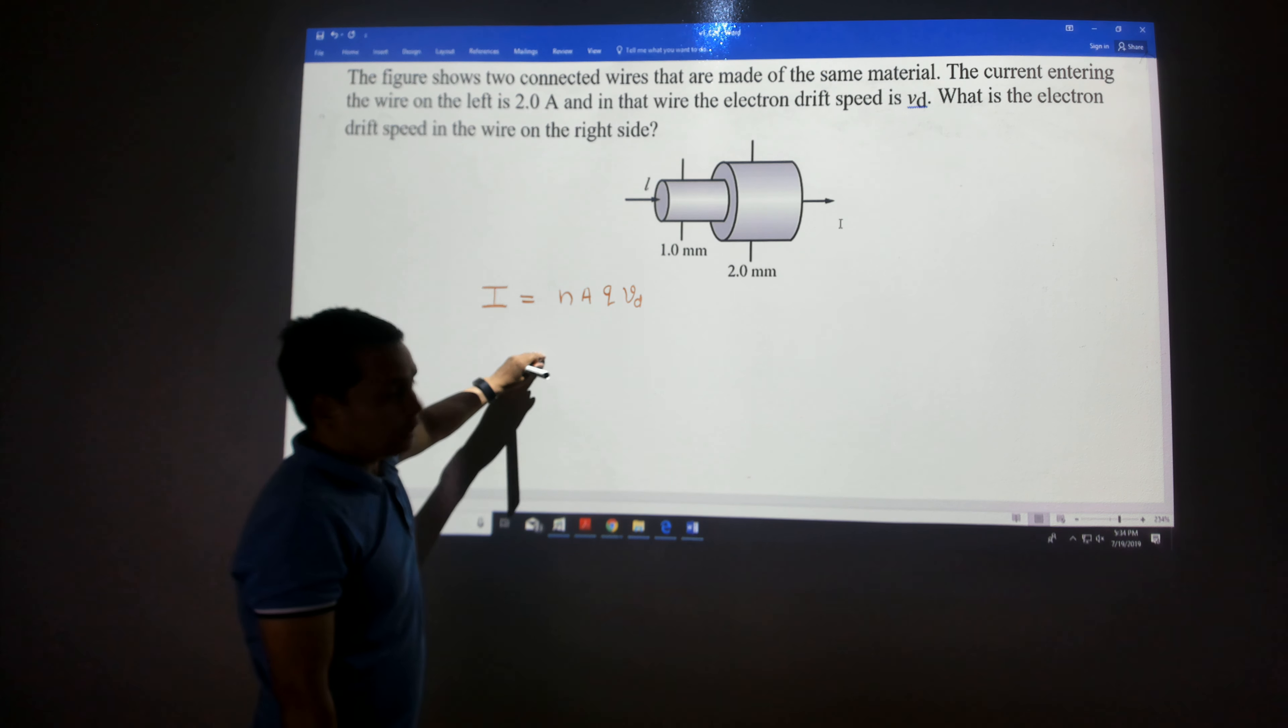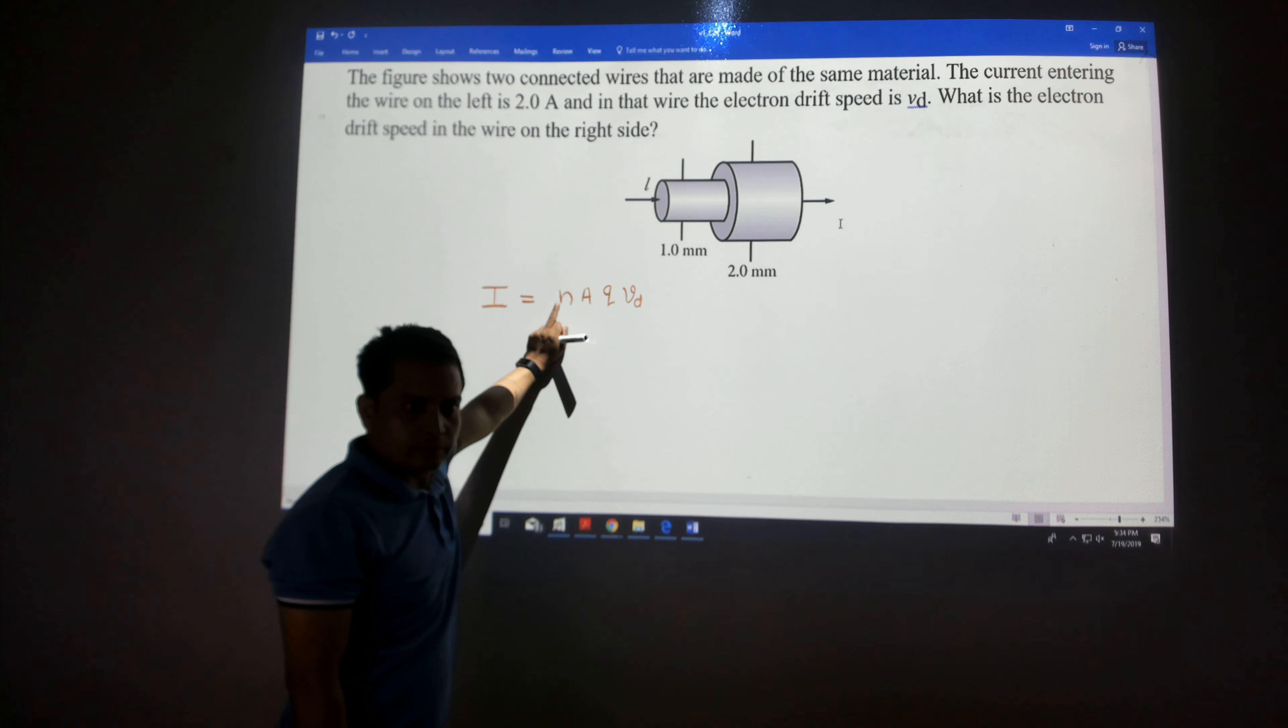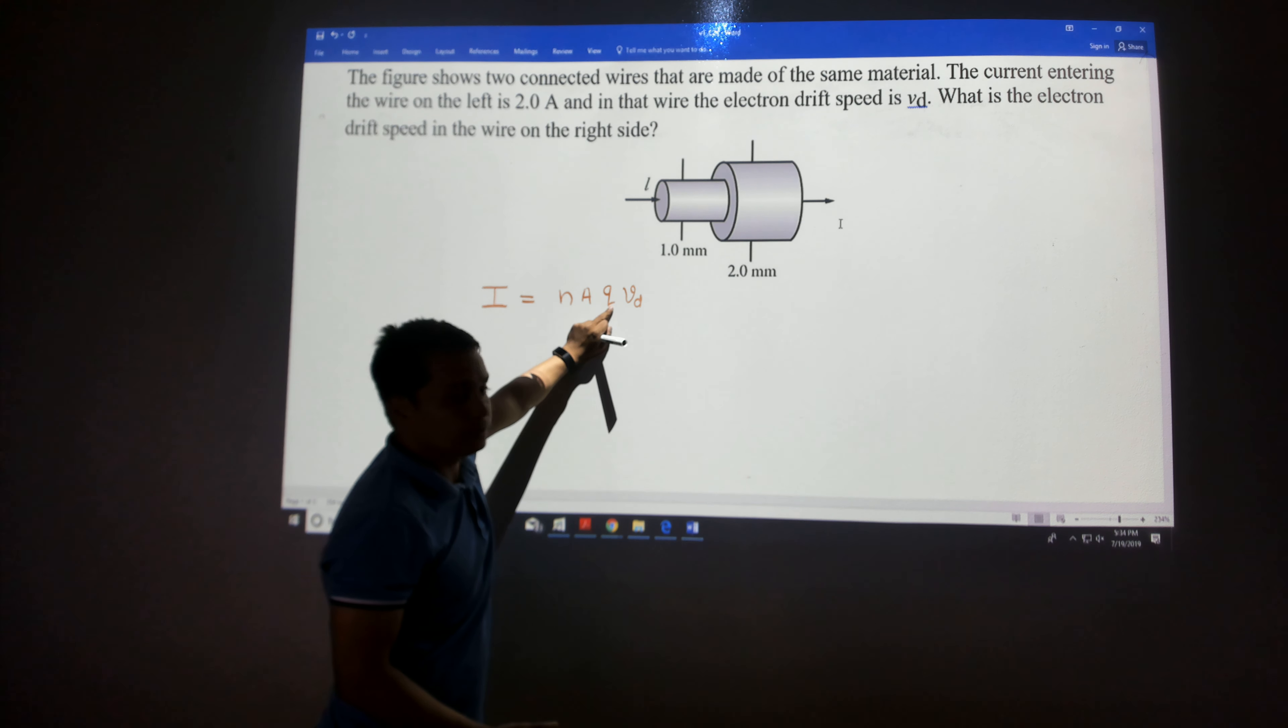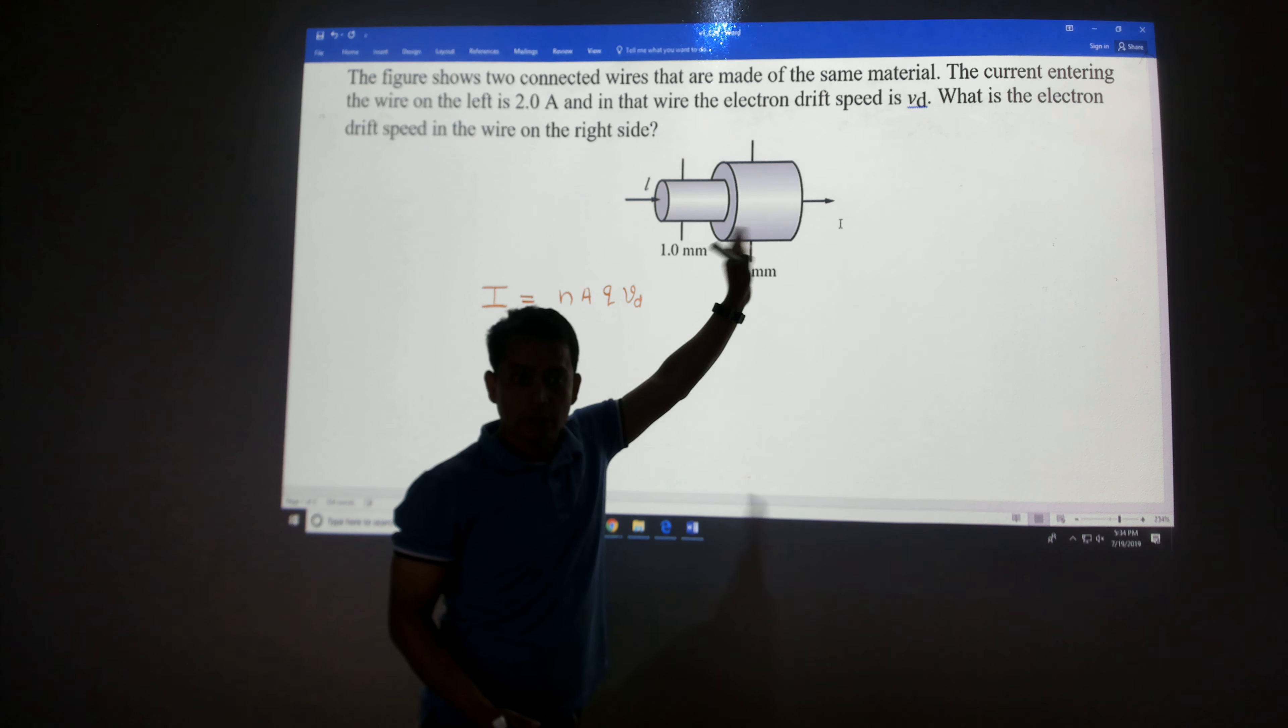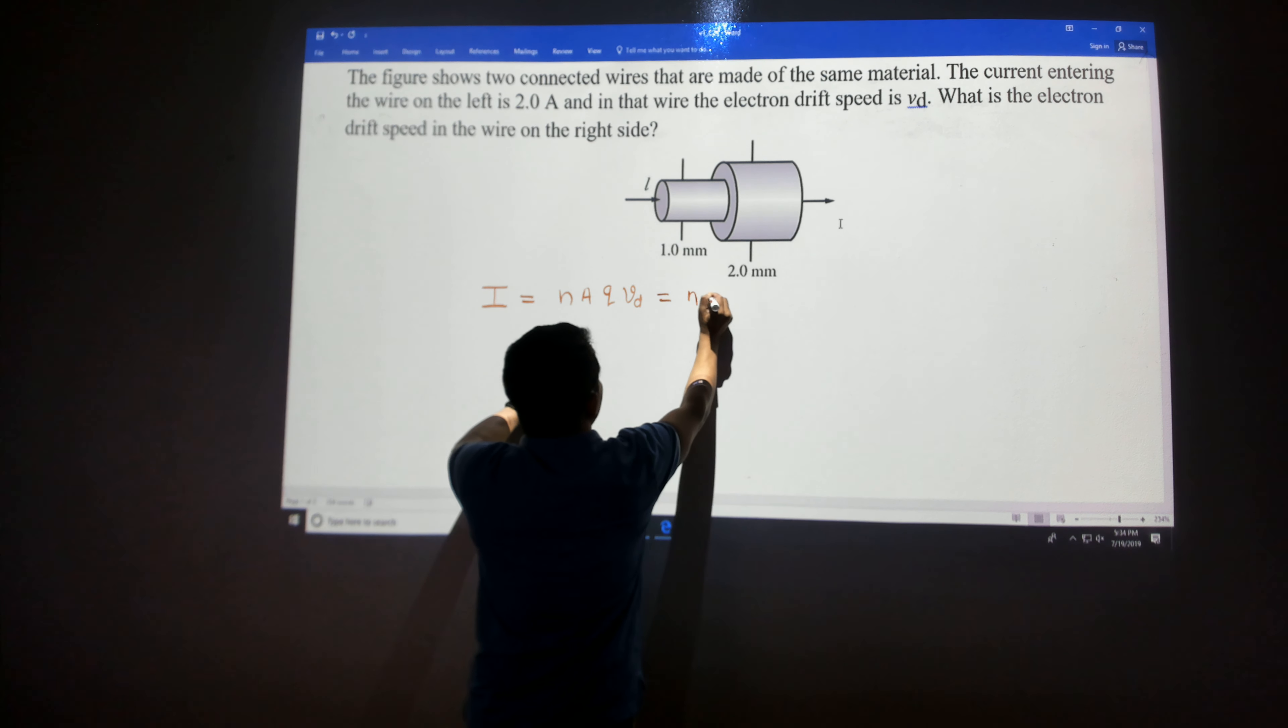N is the electron density, the number of electrons per unit volume. A is the cross-sectional area, Q is the charge, and VD is the drift velocity. As the same current flows through both wires, I can write this as I = NA'QVD' because they're made of the same material.